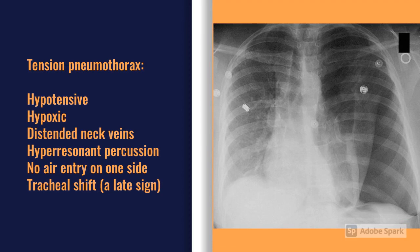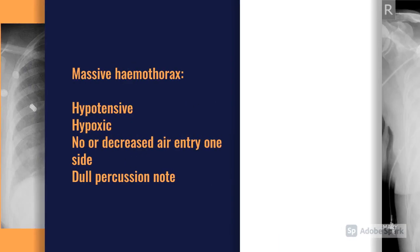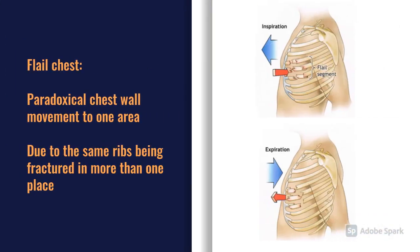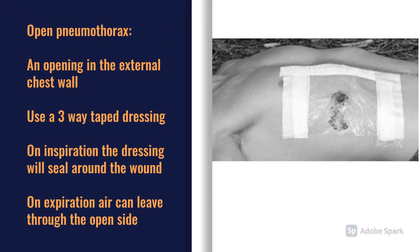The four significant traumatic breathing injuries are: first, tension pneumothorax — look for distended neck veins, deviated trachea, and absent air entry on one side. Second, massive haemothorax — similar presentation but possibly without deviated trachea or distended neck veins. Third, flail chest, where part of the chest moves paradoxically. Fourth, open pneumothorax — seal it with a dressing taped on three sides and one side left open. Oxygen is also important in your breathing assessment.